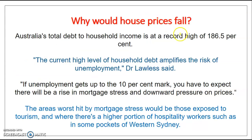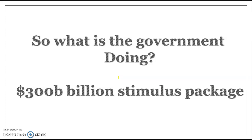House prices are also likely to fall. Australia has the highest household debt in the world, so if unemployment rises above 10%, we're likely to see more people defaulting on their mortgages. That would lead to more housing supply, similar to the GFC, pushing prices down. However, government stimulus packages hopefully will prevent widespread mortgage defaults and protect house values.